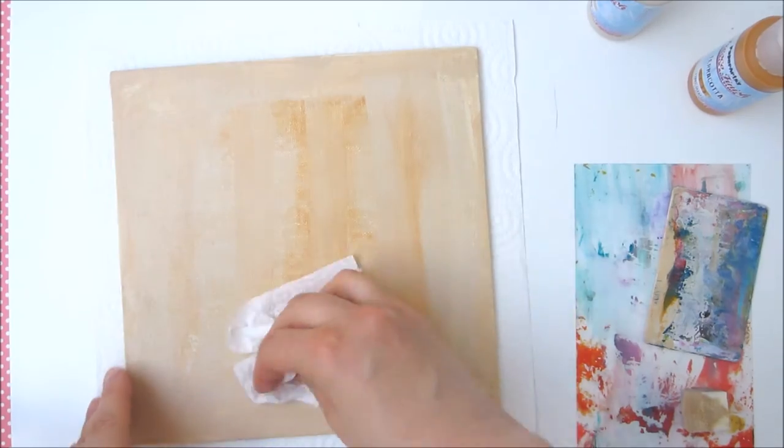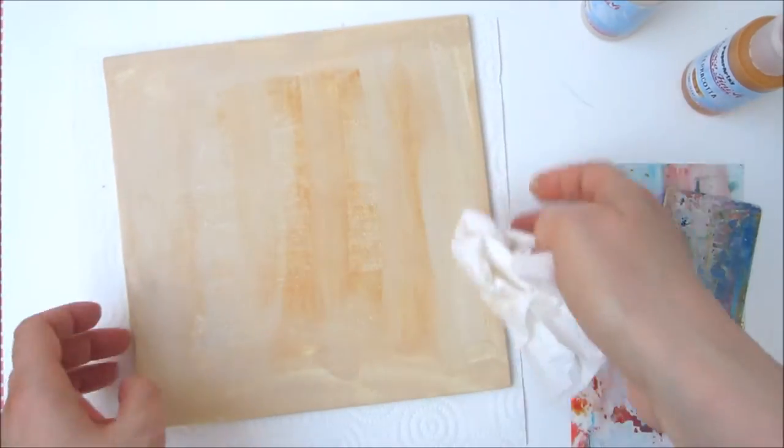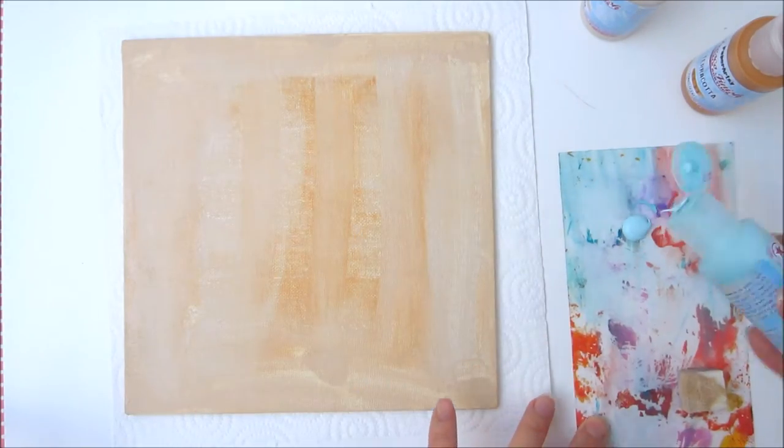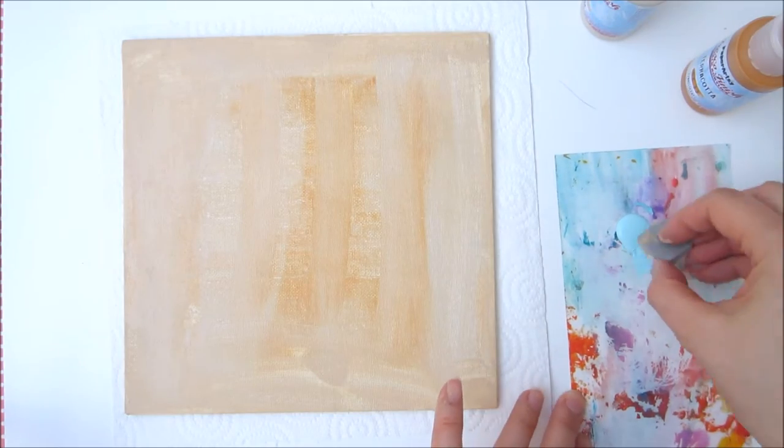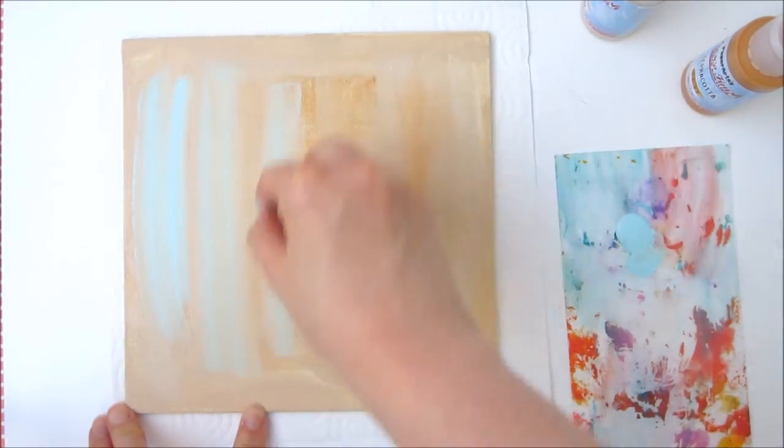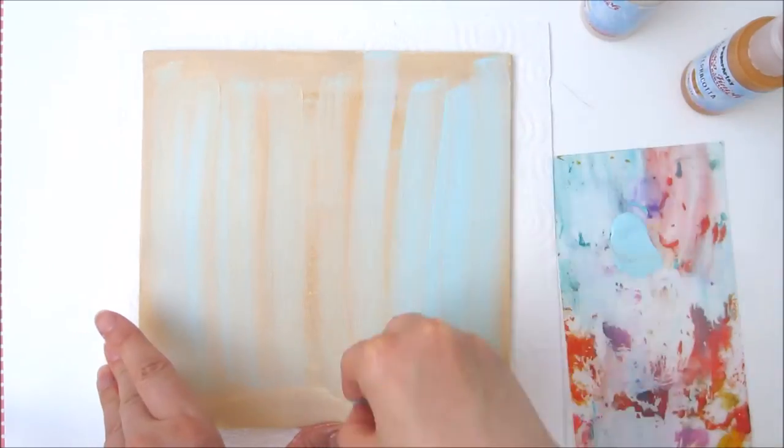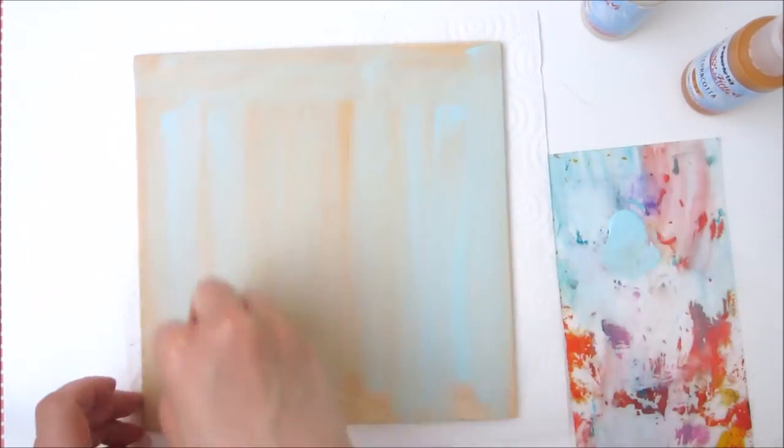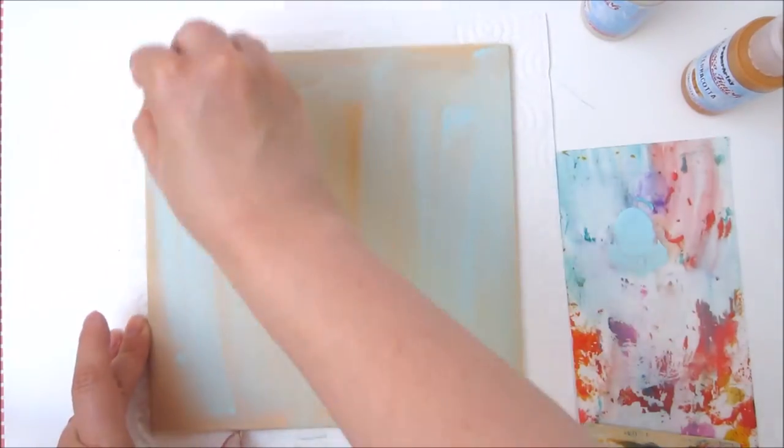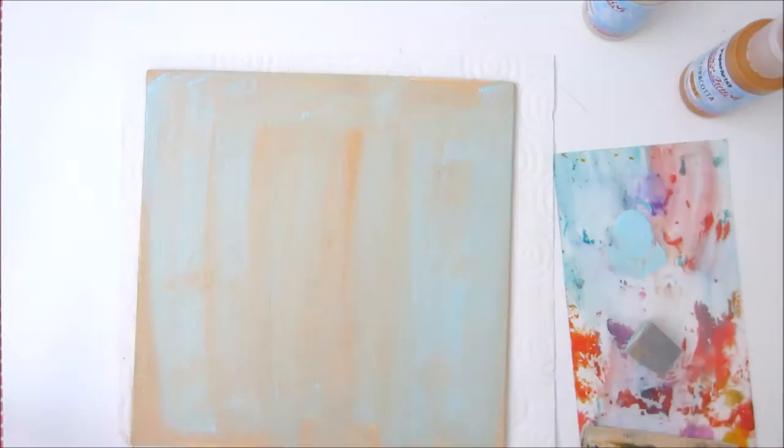So I'm going to lift off any excess paint with a piece of kitchen towel. This is a great way to add a bit more texture. Next, I'm going to apply some Mermaid paint and this time I'm adding it to a palette and then applying it to the canvas with a piece of foam. I don't want to cover the whole surface and I'm again using some kitchen towel just to lift off some of the paint.